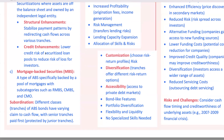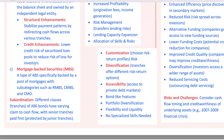Moving into a more specific type of pass-through security, we have mortgage-backed securities, MBS, which are backed by a pool of mortgages. Mortgage-backed securities come in several varieties, each with its own unique features. We have residential MBS, RMBS, which are backed by home mortgages, and commercial MBS, also known as CMBS, which are backed by loans on commercial properties. Another type is the collateralized mortgage obligation, CMO, where the cash flows from the mortgage pool are divided into tranches with different maturities and payment structures.